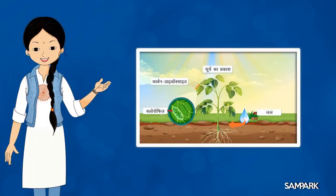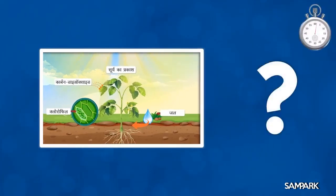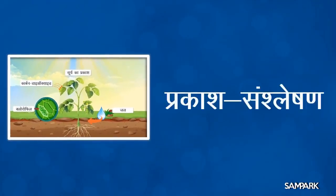देखो बच्चों, इस अगले चित्र में पौधे के भोजन बनाने की प्रक्रिया को दर्शाया गया है। इस प्रक्रिया को क्या कहते हैं? इसे प्रकाश संश्लेषण कहते हैं। संश्लेषण मतलब बनाना, तो प्रकाश संश्लेषण मतलब प्रकाश की उपस्थिति में भोजन बनाना।